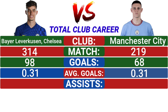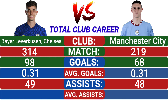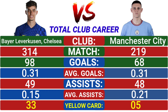Havertz provided 49 assists and Phil Foden provided 48 assists. Havertz's average assists per match is 0.15, and Phil Foden's is 0.21. Havertz received 33 yellow cards, while Phil Foden received 5 yellow cards and 1 red card.